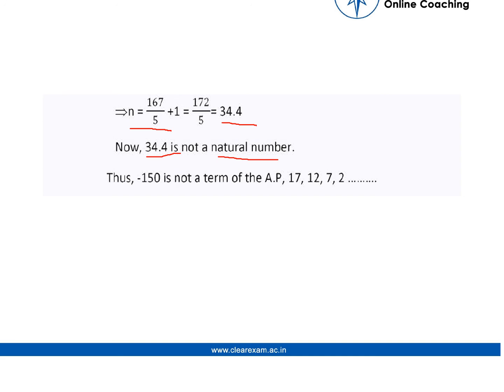In order to be a part of the AP, n has to be a natural number. Thus minus 150 will not be the term of the given AP.